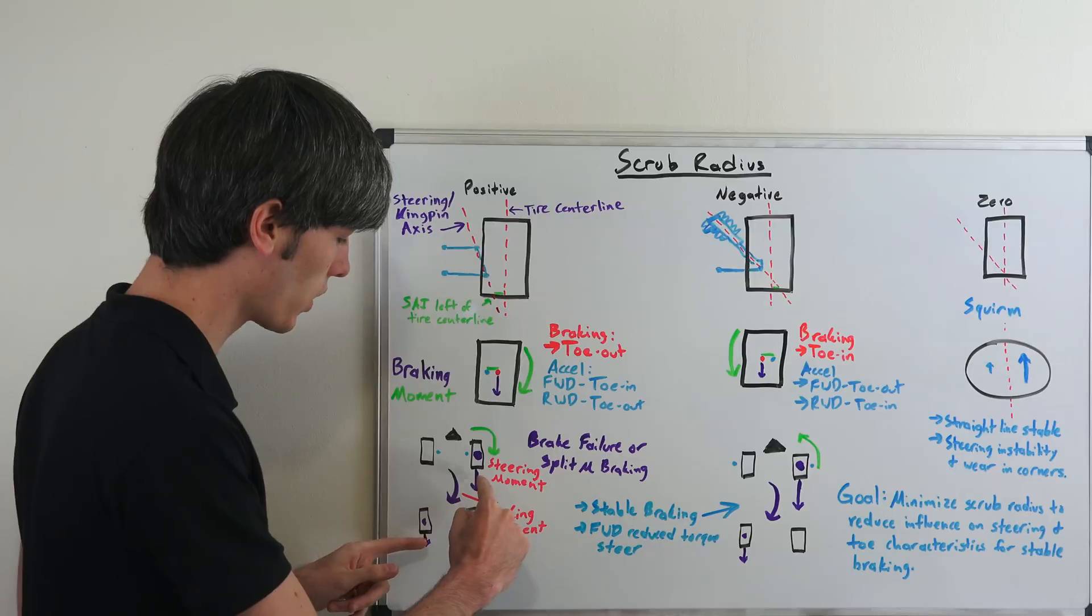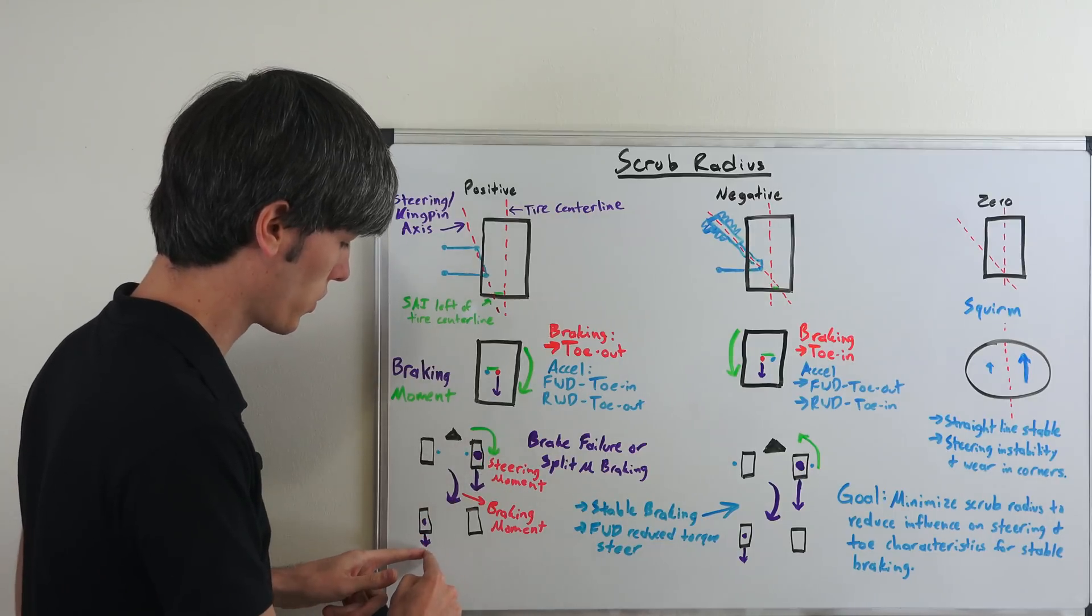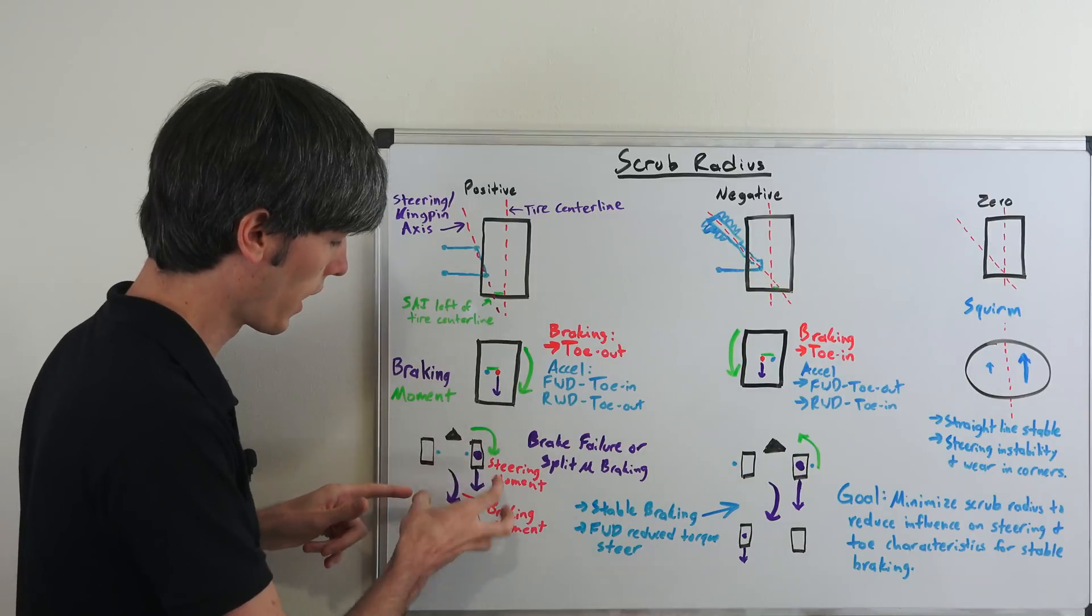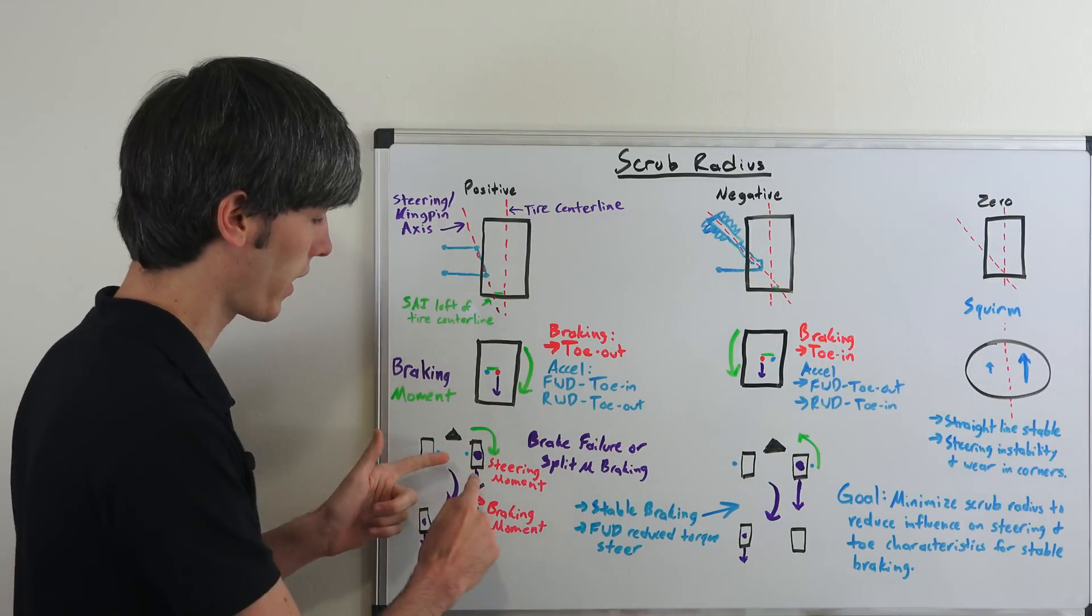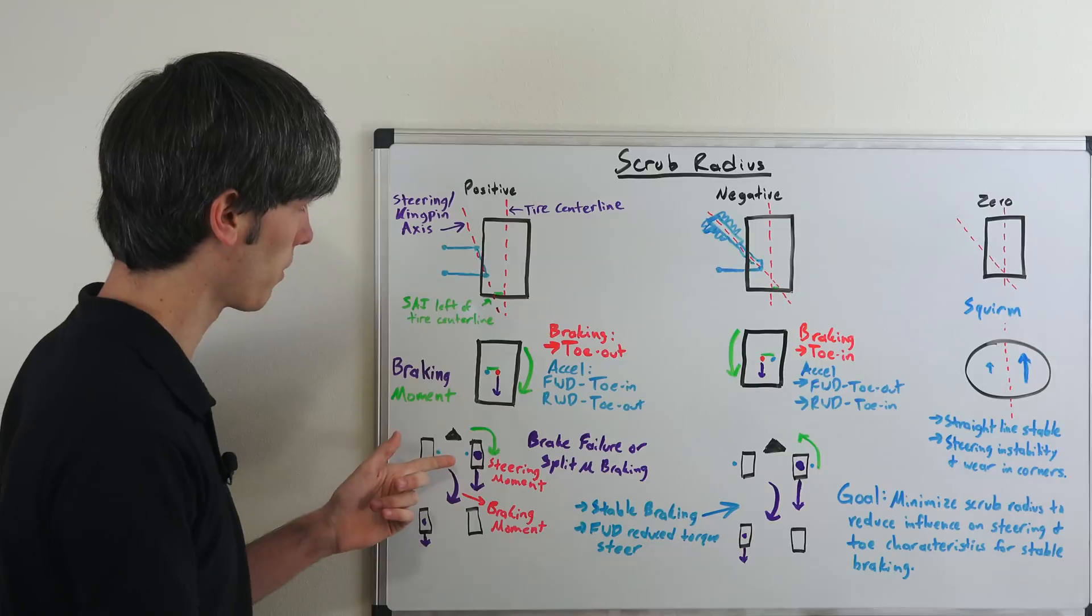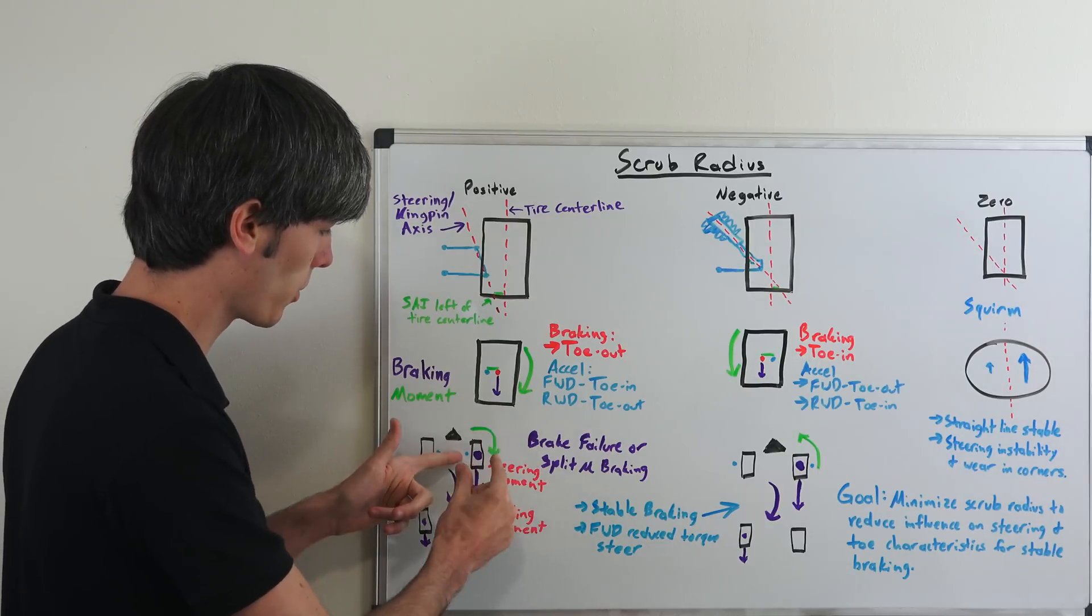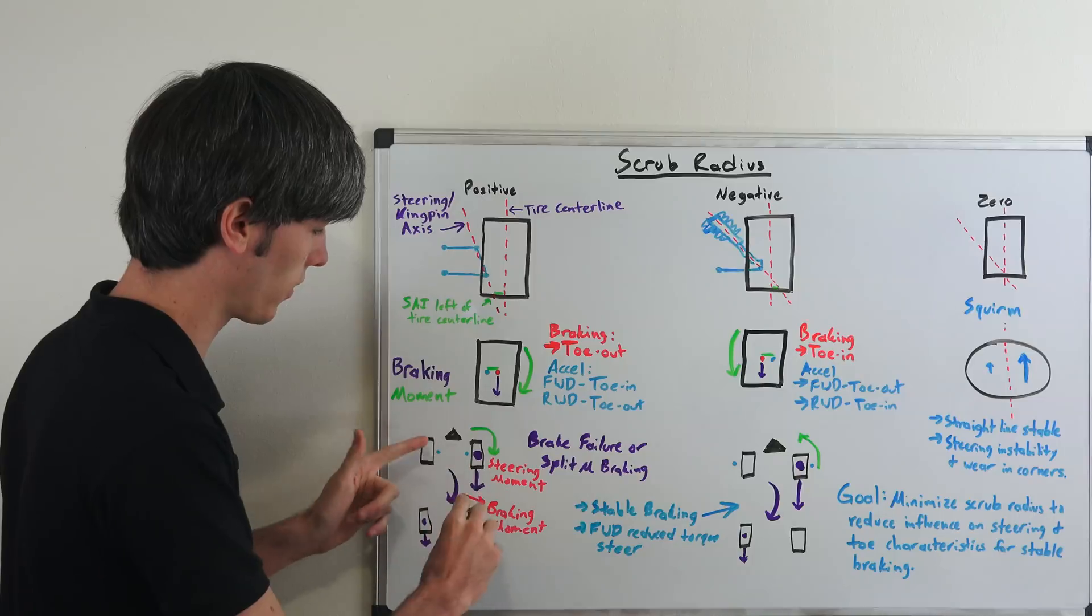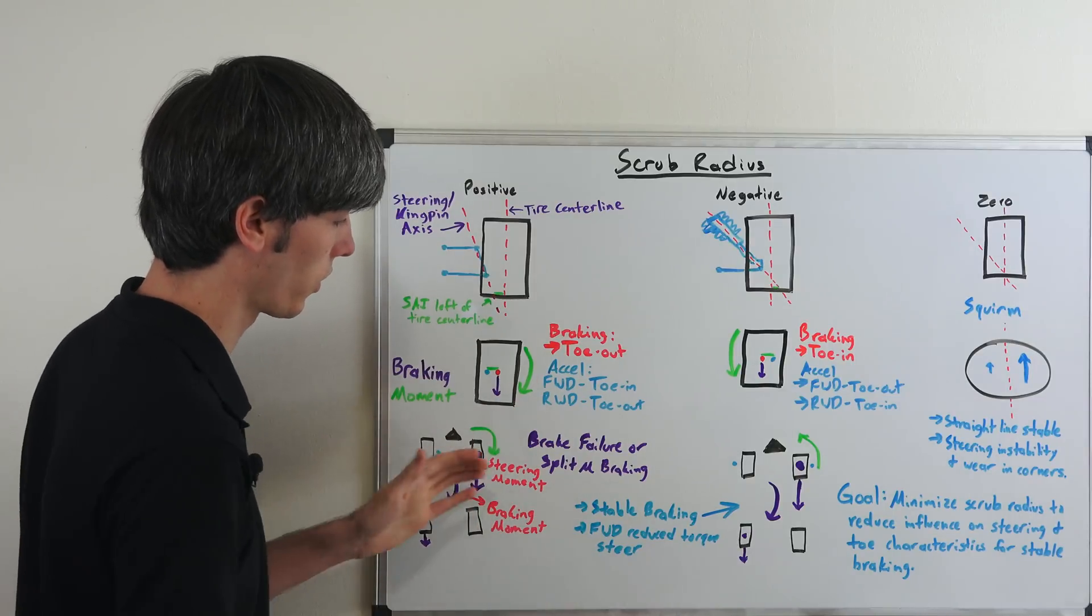So as you can see here you have an imbalance and so this large braking force here is going to counter this small braking force here and your vehicle is going to want to rotate like this. Well, the other downside is because you have a positive scrub radius you're going to have this moment and so the steering moment is also going to want to rotate that same direction. So the car is going to want to pivot in that direction, turn off and get seriously off course.